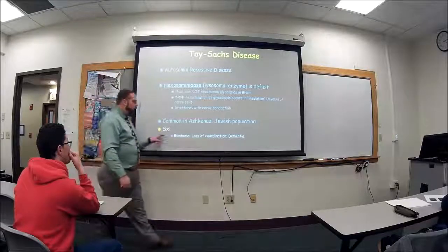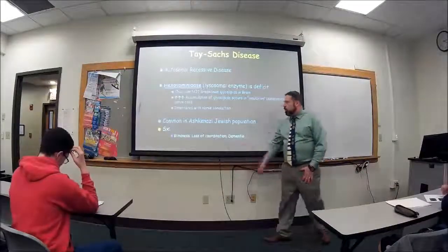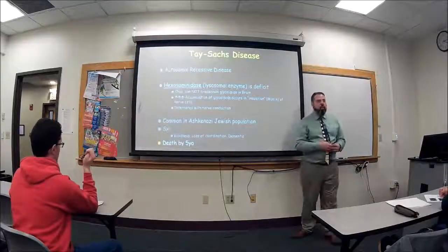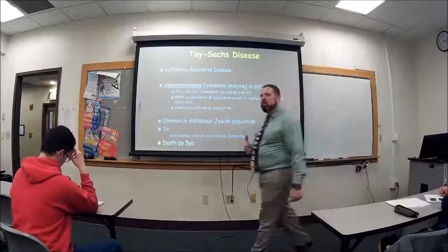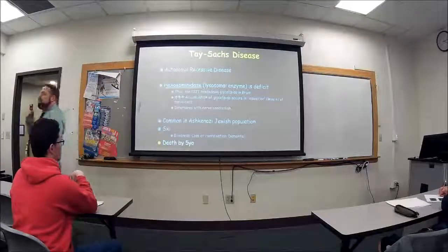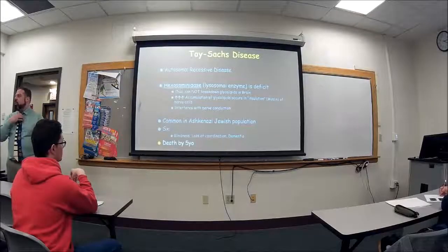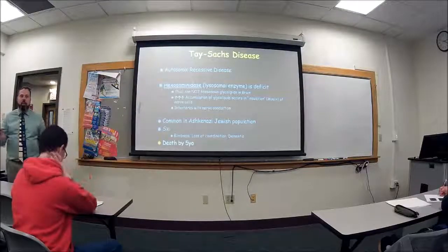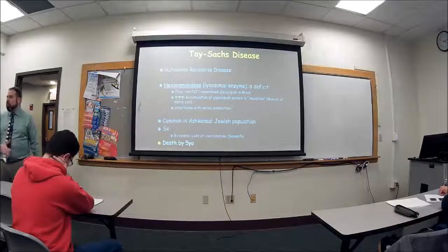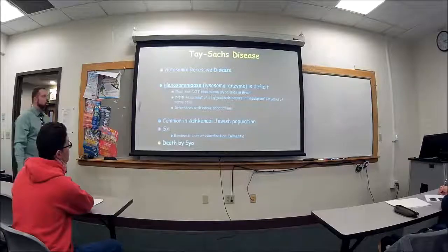Signs and symptoms of Tay-Sachs include blindness, loss of coordination, and dementia. Children usually die by five years old. If there's a family history of Tay-Sachs, you want to get tested because it's a genetic disease and children don't usually live past five or six years old.